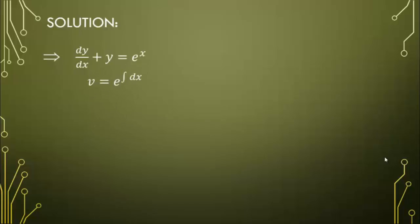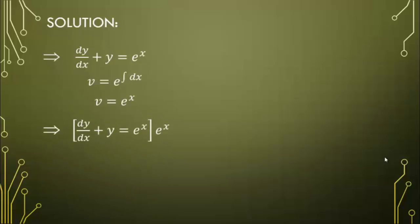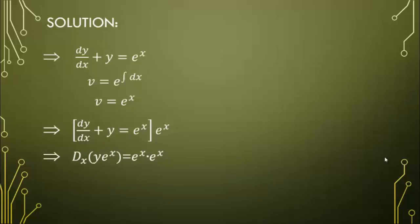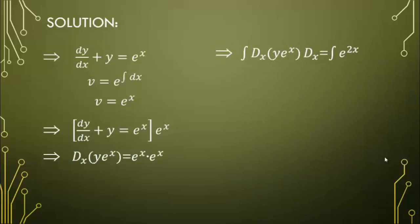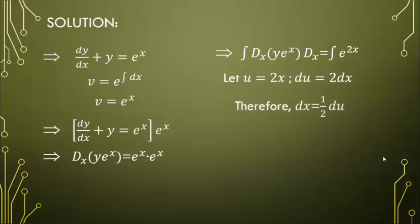Finding the integrating factor, we will use v = e raised to the power of the integral of dx, so v = eˣ. Multiplying the original equation by the integrating factor gives d/dx of (y·eˣ) = eˣ · eˣ. Integrating both sides, we let u = 2x so du = 2 dx, therefore dx = ½ du. Then y·eˣ = ½ e²ˣ + C.